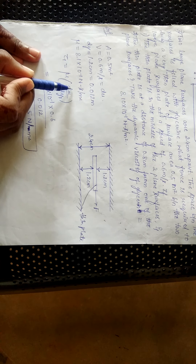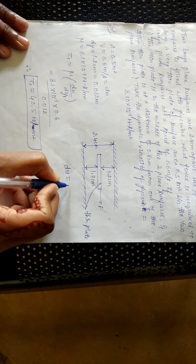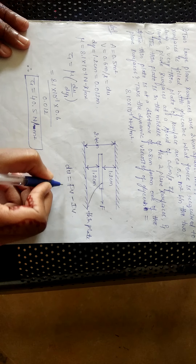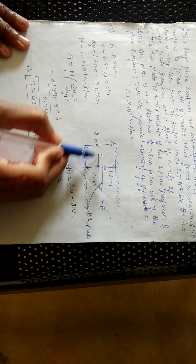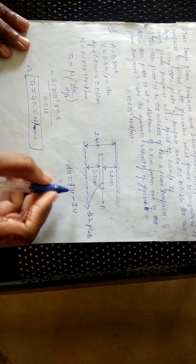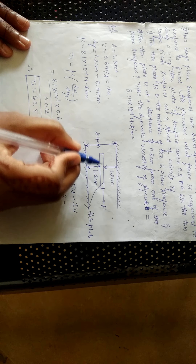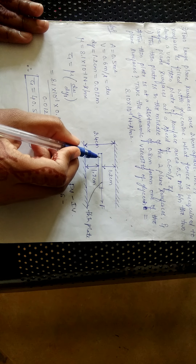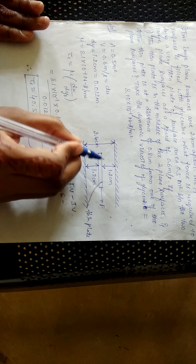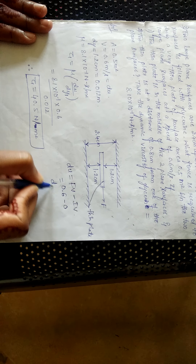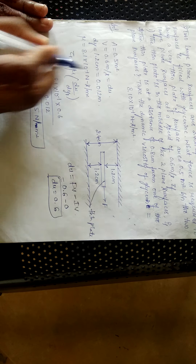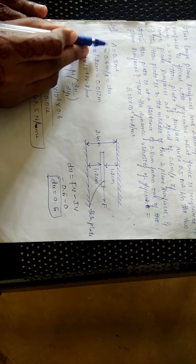Now let us find the value of du. du represents the change in velocity, which is final velocity minus initial velocity. The final velocity is the velocity of the plate, given as 0.6 m/s. The initial velocity is always considered as the velocity when the plate is at rest, which is 0. So du = 0.6 − 0 = 0.6 m/s. That is why du is taken directly equal to the velocity of the plate, v = 0.6 m/s.